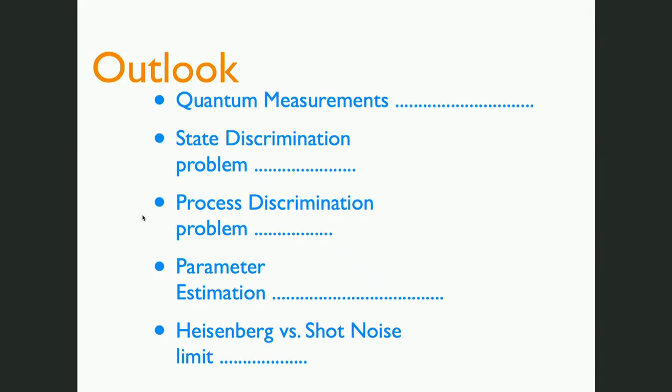The outlook of this presentation is as follows. I will start by briefly reviewing what a quantum measurement is and how we formalize these processes in quantum mechanics. Then I will move to discuss explicitly the state discrimination problem, process discrimination, and parameter estimation.